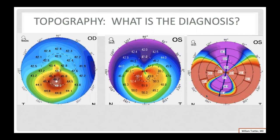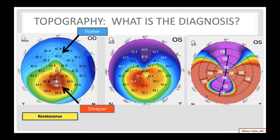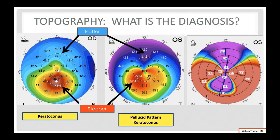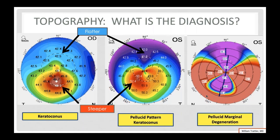Let's talk about some basics about topography and tomography and diagnosis. The image on the left is keratoconus. The middle image shows a collusive pattern keratoconus — sometimes called pellucid because of the crab-claw appearance — but the thinnest spot is actually quite central, making it more of a keratoconus with a pellucid pattern. The last image on the right is actually pellucid marginal degeneration, where the thin spot is quite peripheral. These patients can end up with 15, 20, or even 30 diopters of astigmatism.